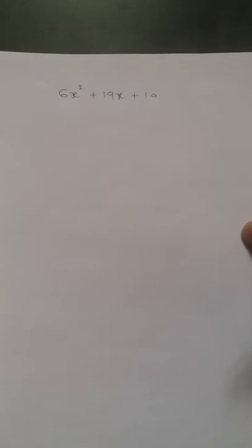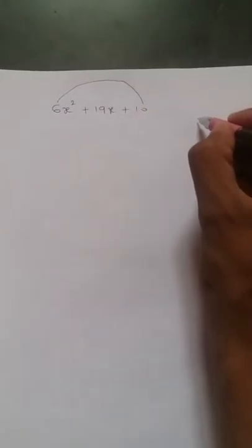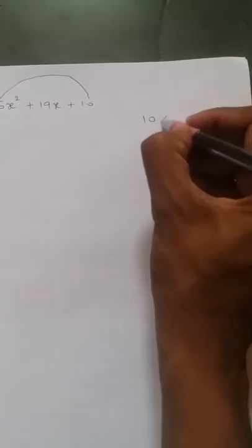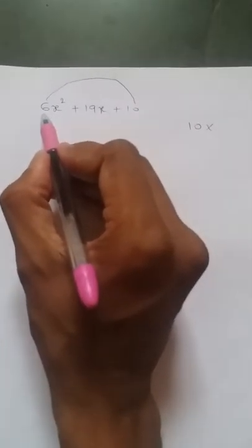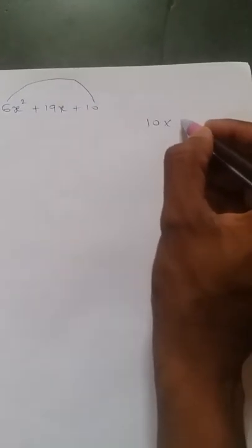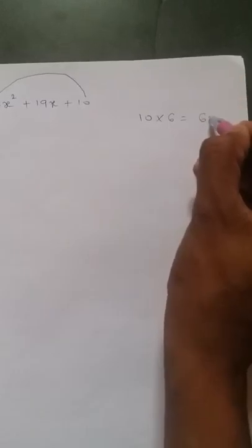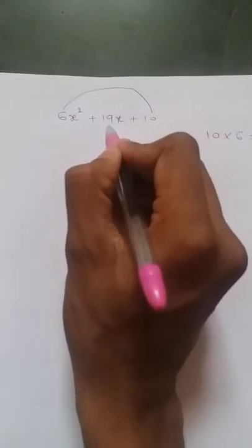Hello everyone, let us go with one more example: finding the roots by splitting the middle term into two terms. The first thing is multiplying the constant and coefficient of x². Here the constant is 10 and the x² coefficient is 6, so multiply 10 times 6 to get 60. Now here we need to split the middle term 19x into two terms.